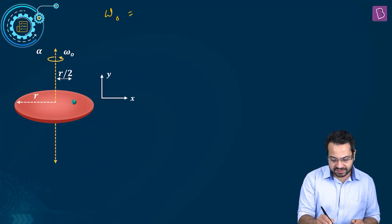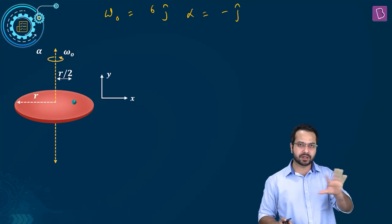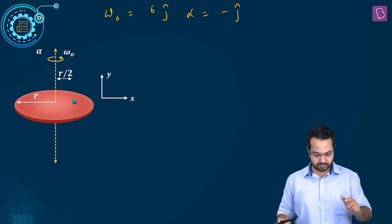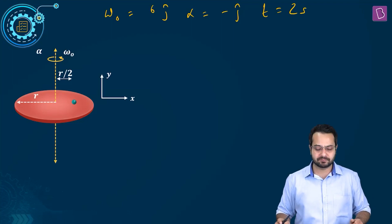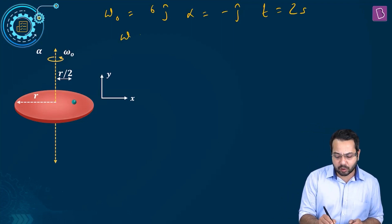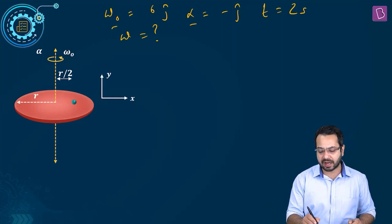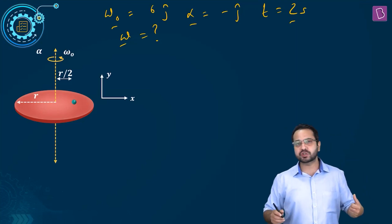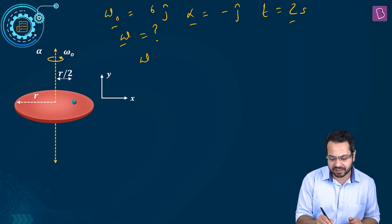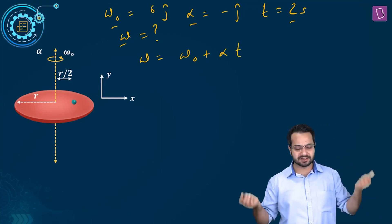So omega naught is 6j and alpha is minus j, with appropriate units. The time given is 2 seconds. I require omega at the end of 2 seconds. I have omega naught, I have alpha, I have time — what I need is omega. The equation to use is omega equals omega naught plus alpha times t.